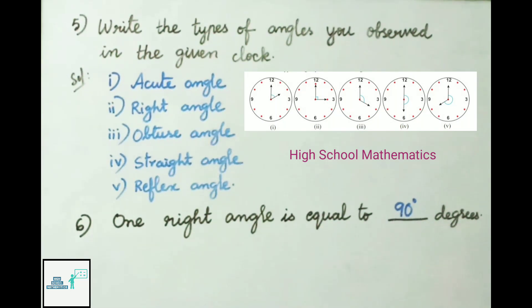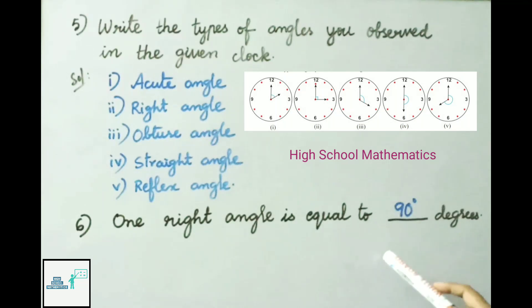Question 6: One right angle is equal to how many degrees? It is 90 degrees.